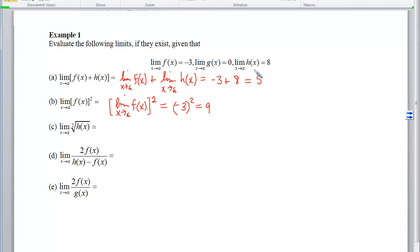So I'm now going to skip this intermediate step and just go directly to the answer. This says I can compute the limit of h which is 8 and then take the square root. Next one says I can double the limit of f and then divide by the limit of h minus the limit of f. So we end up with a negative 6 over 11. Final one, I can double the limit of f and then divide by the limit of g. Now here's where we run into that problem we saw in limit law number 5. We're not allowed to divide by 0 so this particular limit does not exist.